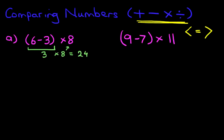Now on the right hand side, again do the brackets first. 9-7 is 2. And then we do the next bit: 2 times 11. What is 2 times 11? It is 22.